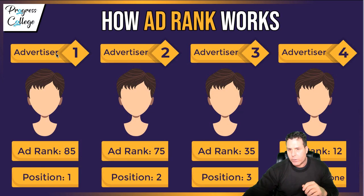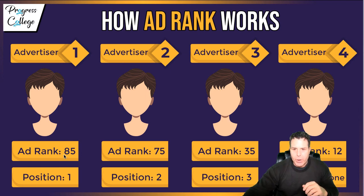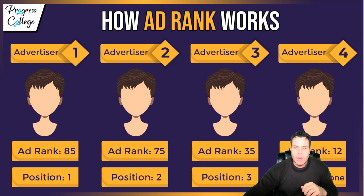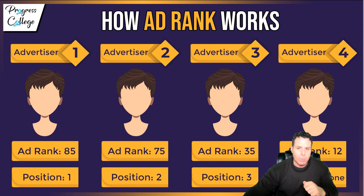Here's how it works. Advertiser one has an ad rank of 85 — he gets position one. Advertiser three has an ad rank of 35 — he gets position three. And basically this guy down here is struggling; he can't even get a spot on Google's homepage for that keyword because his ad rank is bad and he's not bidding high enough. The ad rank and the bid kind of all play in the same formula.